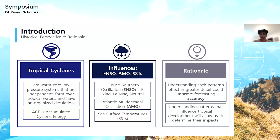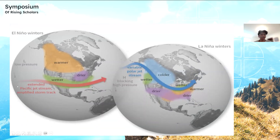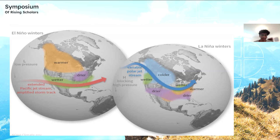So what influences tropical cyclones as a whole? The El Niño-Southern Oscillation, which I'm sure some of you have heard of, includes El Niño, La Niña, and a neutral phase. El Niño and La Niña usually affect our winters in the U.S. and don't have much impact on our summers, but they do have an impact on tropical cyclone development, especially in the summer and fall months, with La Niña usually contributing to more hurricanes.